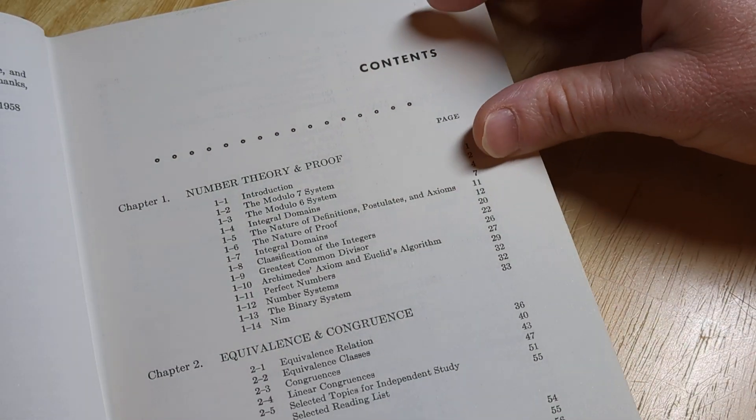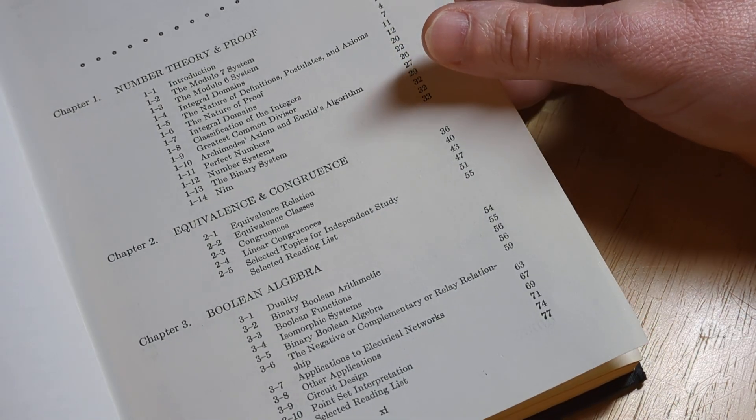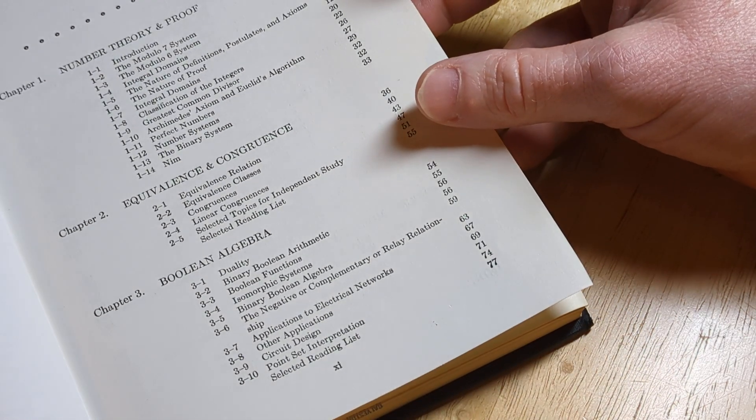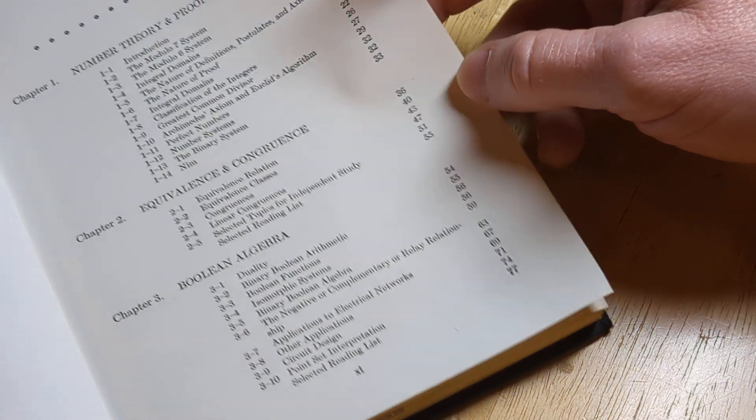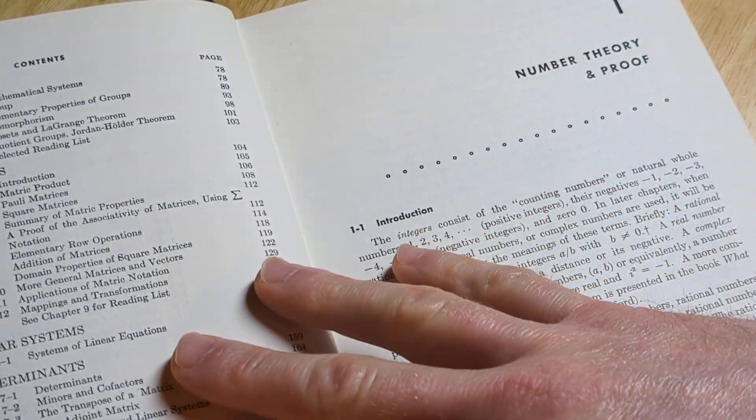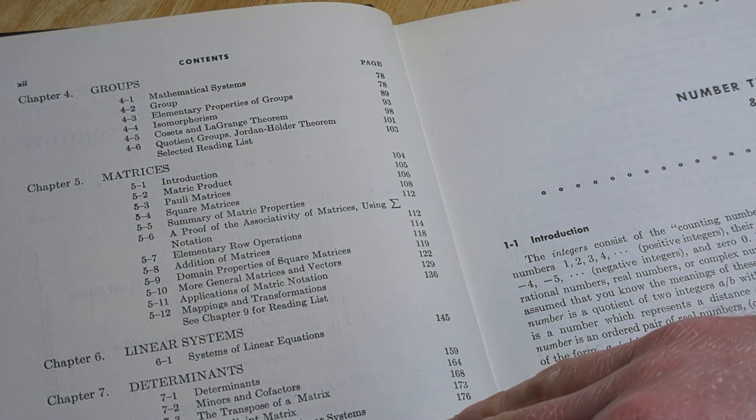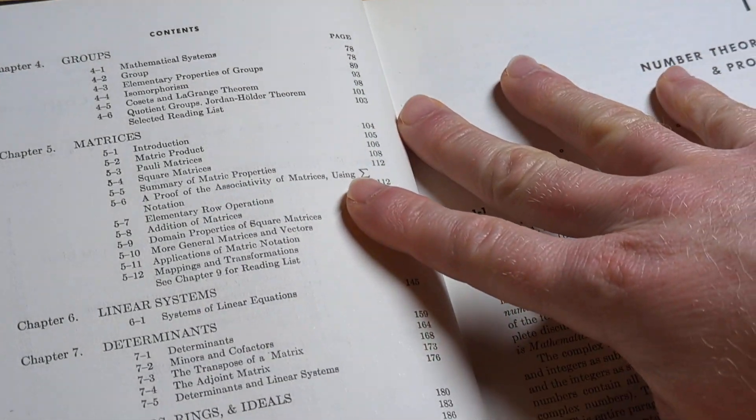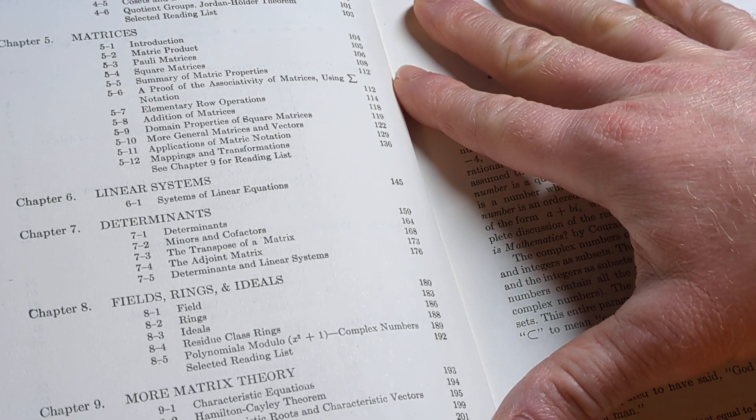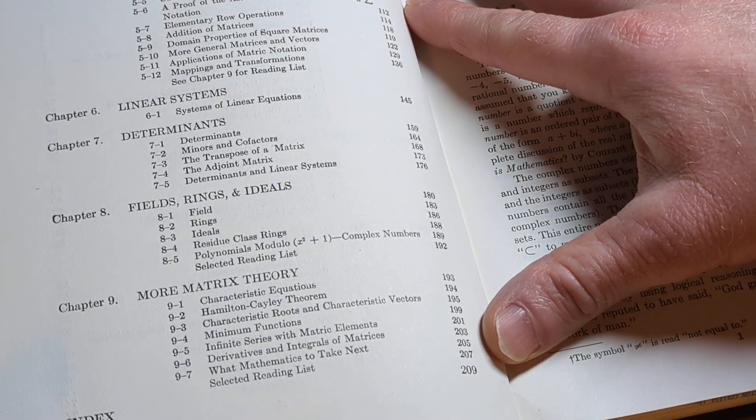Number theory and proof. Equivalence and congruence. Boolean algebra. Wow, the pages just feel so good, the quality feels so good. Matrices, linear systems, determinants, fields, rings, and ideals. More matrix theory.